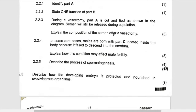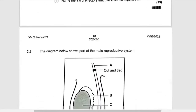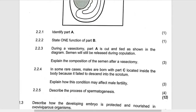Basically, semen will not contain sperm because now it has been blocked. If you look at it here, the sperm are here — they have been blocked, it means they can't go up. So basically, semen won't contain sperm because they won't be transported. What will be contained in the semen will be only the fluid coming from the accessory glands.